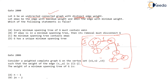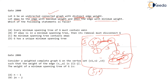Let Emax be the edge with maximum weight and Emin be the edge with minimum weight. Like in this graph, if the weights shown are five, six, seven, then Emax is the edge with weight seven and Emin is the edge one to two with minimum weight.